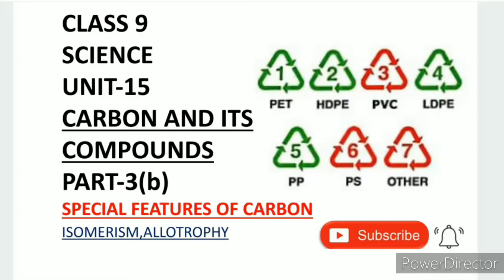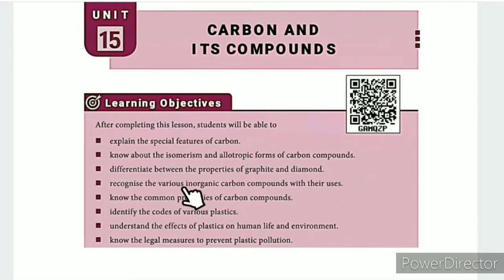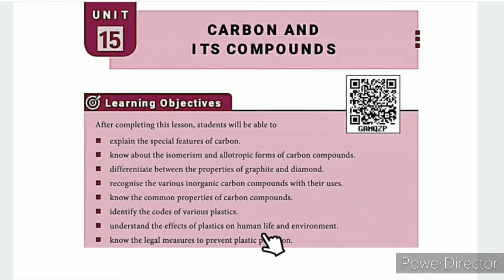Greetings from SS Class 9 Science Unit 15: Carbon and Its Compounds Part 3B — Special Features of Carbon, Isomerism and Allotropy. The learning objectives are: explain the special features of carbon, know about isomerism and allotropic forms of carbon compounds, differentiate between the properties of graphite and diamond, recognise various inorganic carbon compounds with their uses, identify codes of various plastics, understand effects of plastics on human life and environment, and know legal measures to prevent plastic pollution.